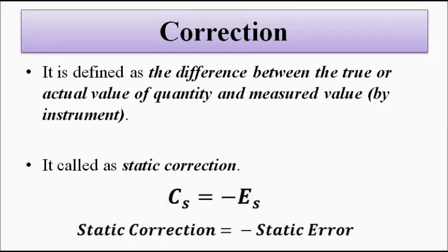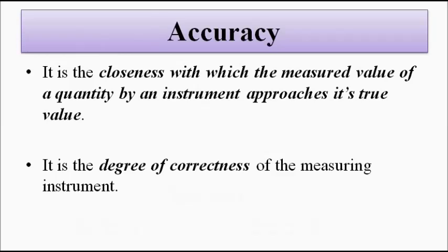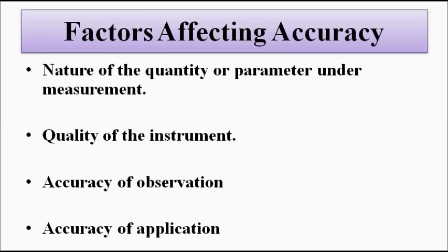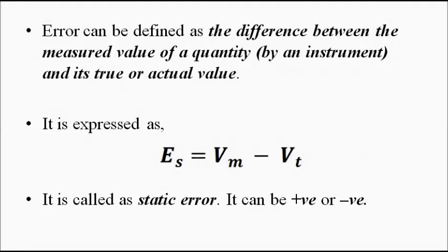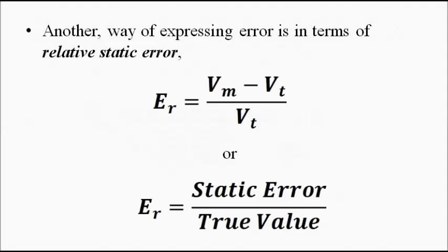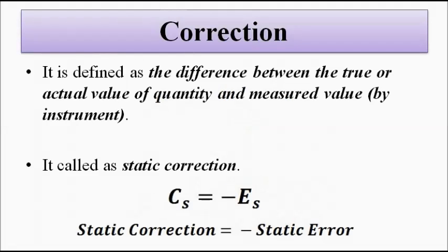Here we discussed the performance characteristic of accuracy, and while discussing accuracy we also covered error — the different ways of expressing error — and correction. In the other videos, we are going to discuss other performance characteristics one by one in separate videos. I hope you liked this video. Please subscribe to my channel Engineering Tutorial for more videos related to electrical, electronics, instrumentation, and communication engineering. Have a great day. Thank you very much.